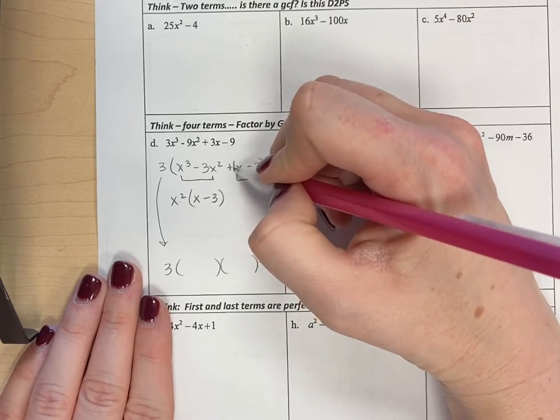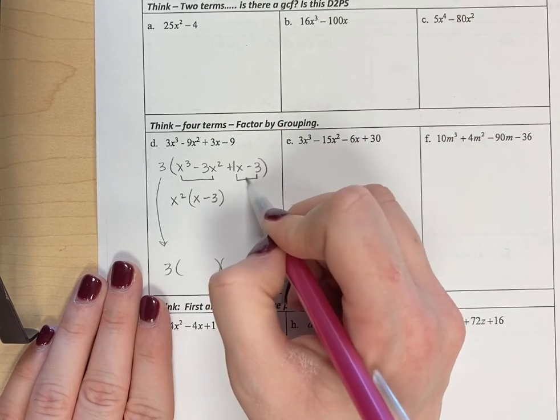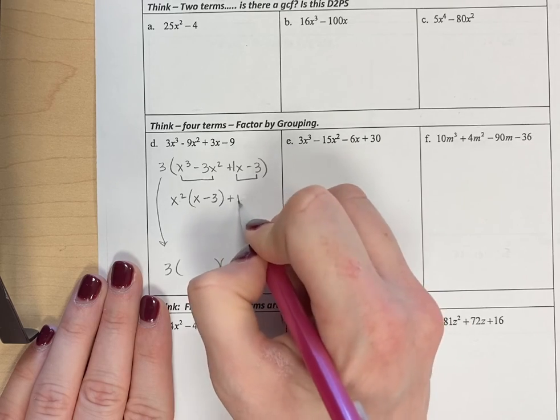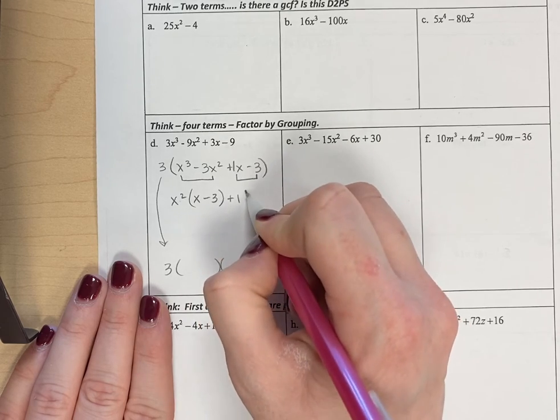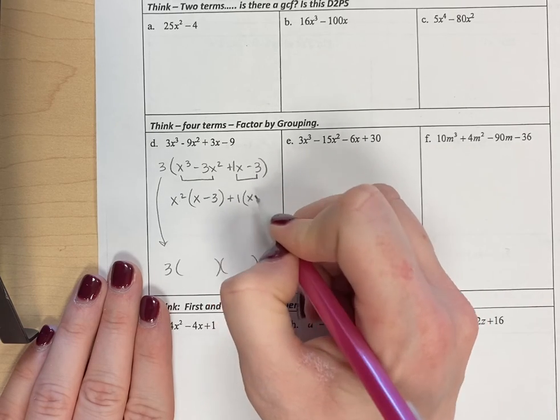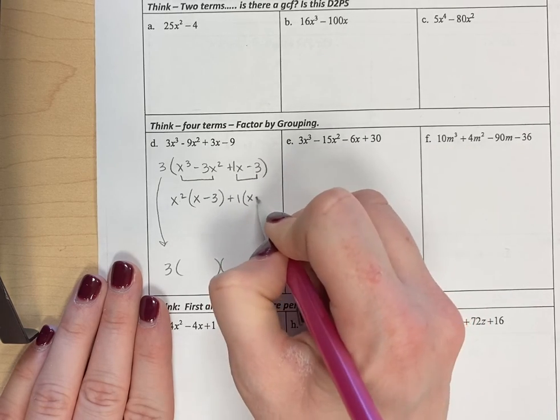This is a 1 here on this x. The only thing that these two things have in common is that 1 goes into both 1 and negative 3. They don't have x's in common, so just a common factor of 1. 1x divided by 1 is x. Negative 3 divided by 1 is negative 3.